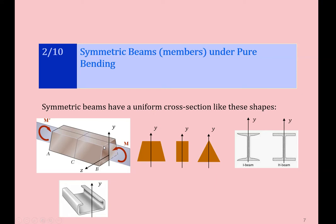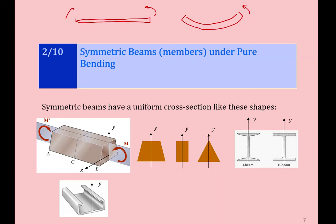A beam with a symmetric cross-section is illustrated here. If this is the longitudinal direction of the beam and pure bending is applied, the beam will curve up. This is the undeformed beam, and once bending is applied, the beam curves up like this. It would curve down if we apply the moment in the opposite direction.